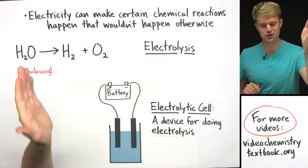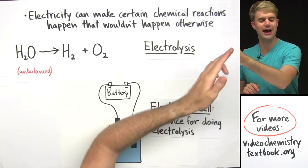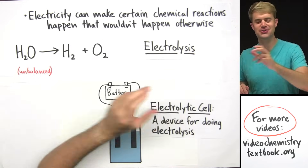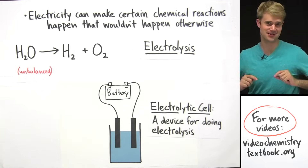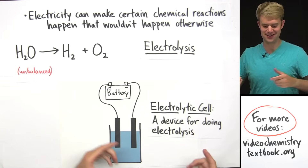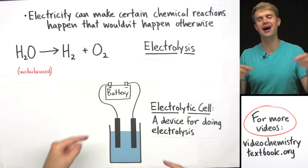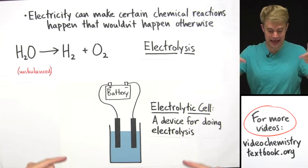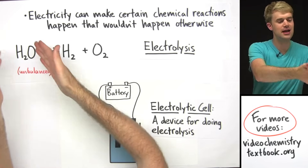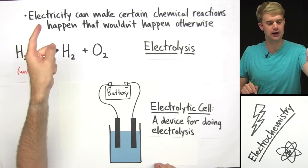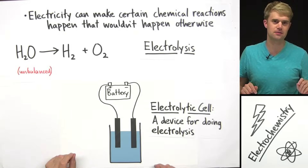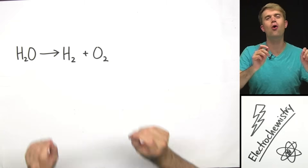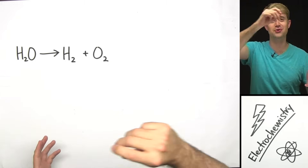Now let's look at how we can use electricity to make certain chemical reactions happen that wouldn't happen otherwise. Using electricity to make chemical reactions happen is a process called electrolysis. We do electrolysis in a device called an electrolytic cell. In our example, we're going to see how we can use electrolysis in an electrolytic cell to take water and split it apart into hydrogen gas and oxygen gas. Just like the reaction we saw earlier with zinc and copper, this is also an oxidation-reduction reaction.